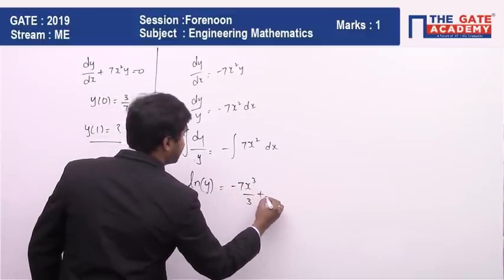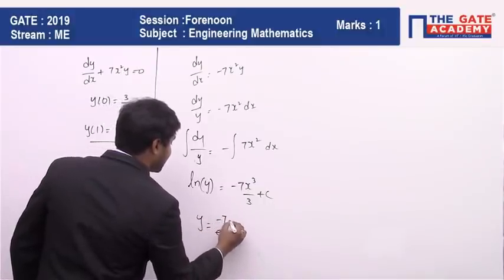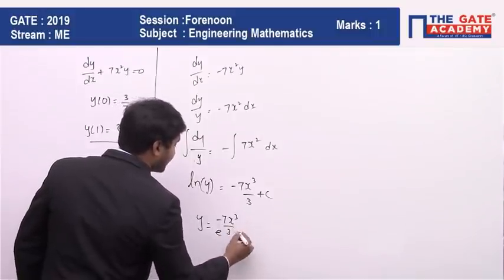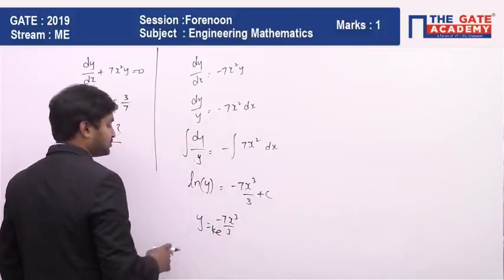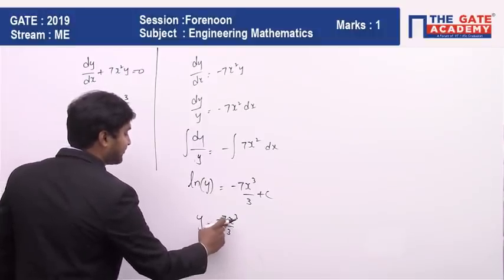So y is going to be e^(-7x³/3) multiplied by e^c, which I can take as a constant k. So y is going to be equal to k times e^(-7x³/3).